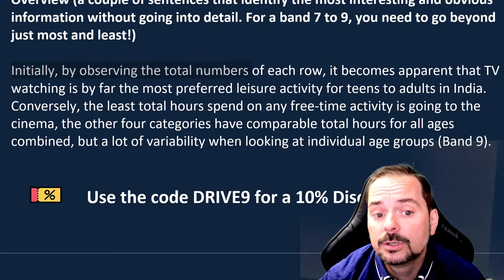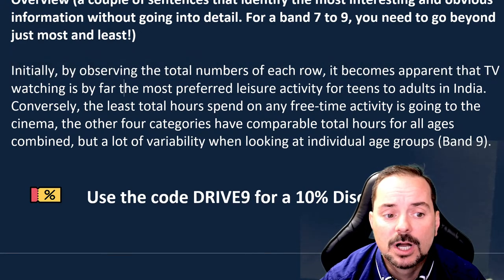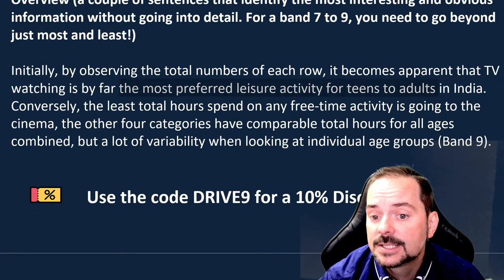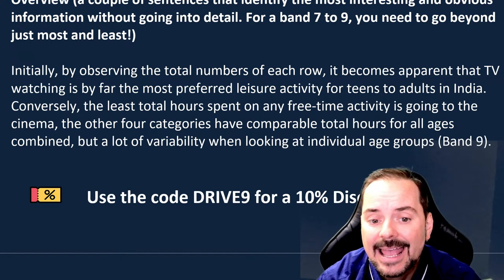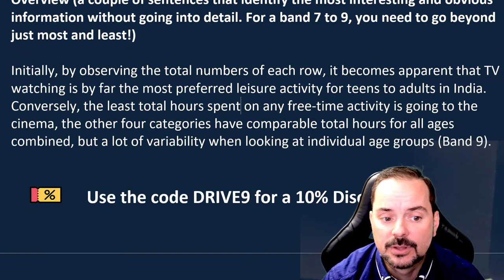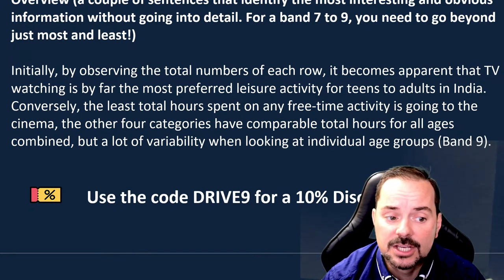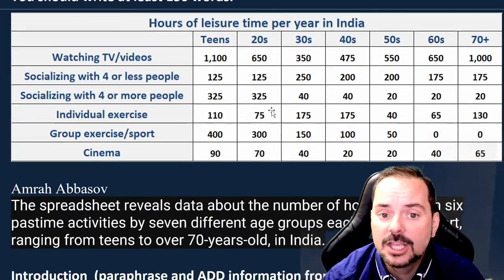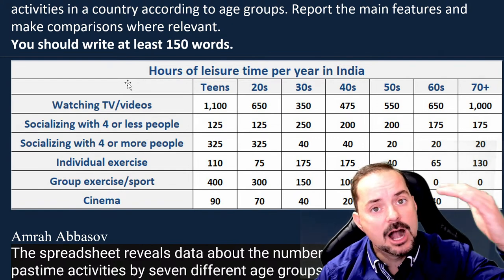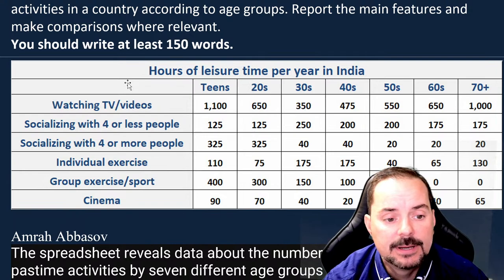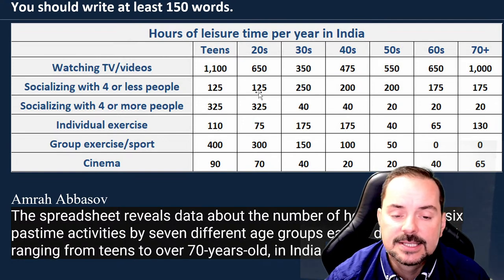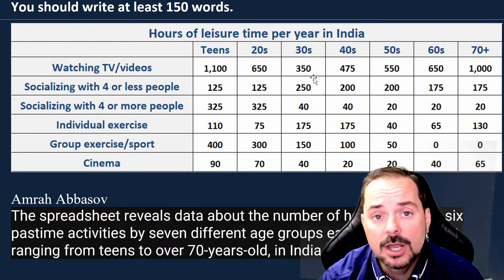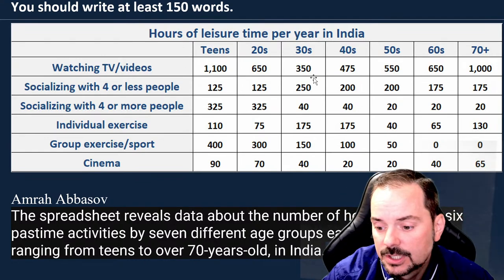The full overview reads: 'Initially, by observing the total numbers of each row, it becomes apparent that TV watching is by far the most preferred leisure activity for teens to adults in India. Conversely, the least total hours spent on any free time activity is going to the cinema. The other four categories have comparable total hours for all ages combined, but a lot of variability when looking at individual age groups.' There is a lot of information in this table — you don't have time to report each number separately.